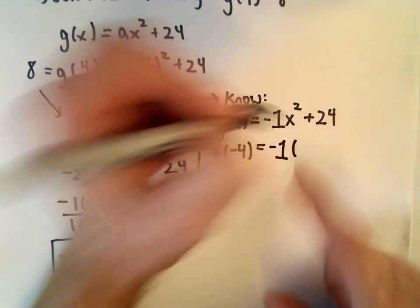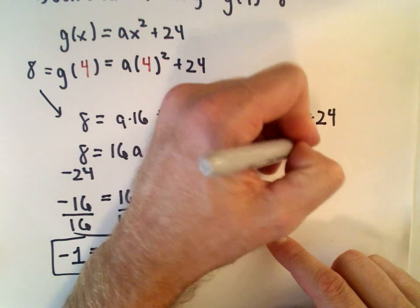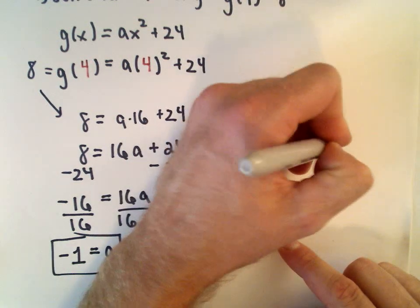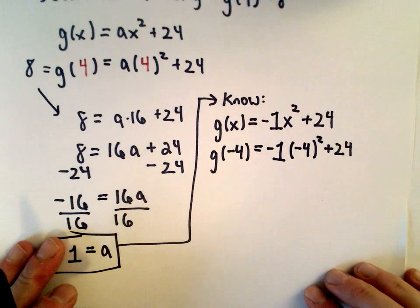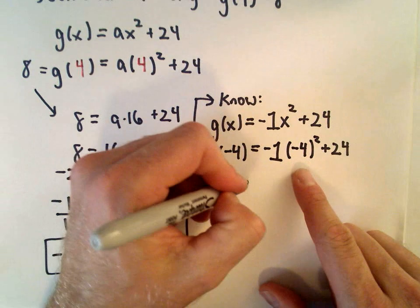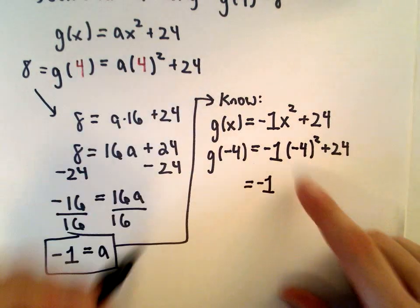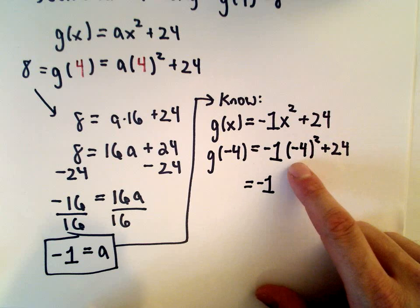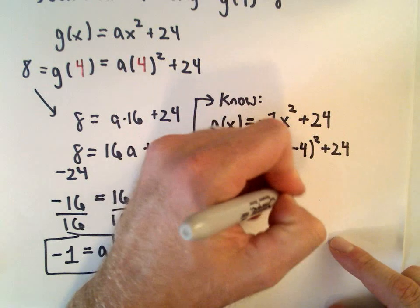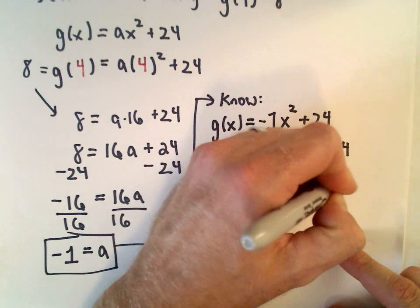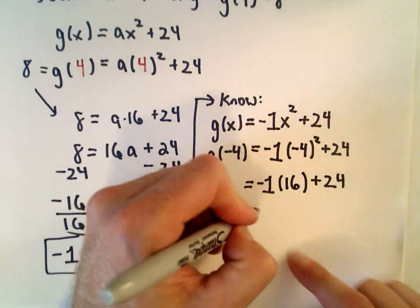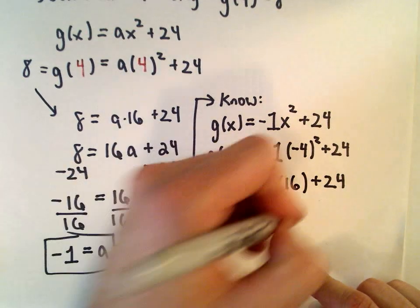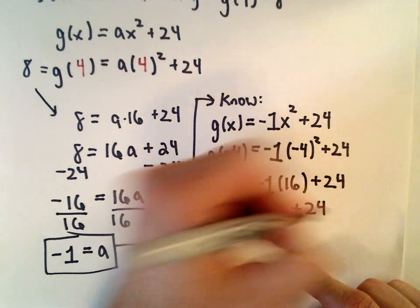So we'll have -1 multiplied by -4, that's all being squared, plus 24. And now the last thing to be careful with is just your order of operations. So we have to square first, so -4 times -4 will give us positive 16 plus 24. -1 multiplied by 16 will be -16 plus 24.